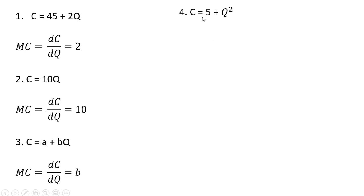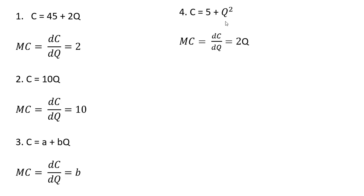Another example. Here we have a nonlinear total cost equation. Cost equals 5 plus q squared. Marginal cost is a derivative concept. The derivative of a constant — in this case 5 — is 0. The derivative of q squared is just 2q. We bring that exponent on the q term out in front, and then subtract 1 from that exponent, so we just have 2q.